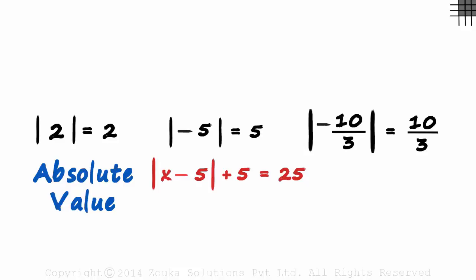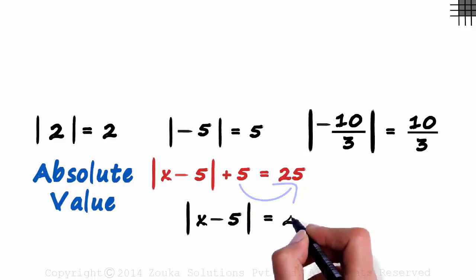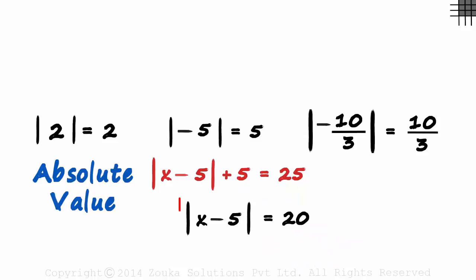Okay, to simplify it a bit, let's transpose this 5 to the other side. We get absolute value of x minus 5 equal to 20. Now it gets interesting.